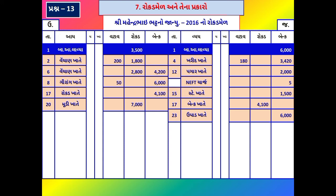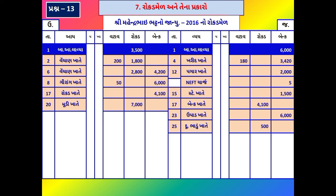તારીખ 25 નો વ્યવાર: રૂ. 500 દુકાન ભાડું ચેકથી ચૂકવ્યું. ચેક સિવાયની કોઈ અલગ સૂચના નથી, તેથી ચેકથી ચૂકવ્યું. ભ્યવાર - અહીં પણ રકમ ગઈ; કમિશન અને ચાર્જ - બંને રકમ બેંકમાંથી ગઈ, તો ઉધાર બાજુ નોંધવામાં આવે.